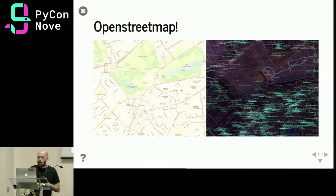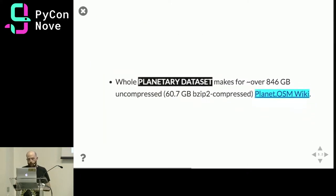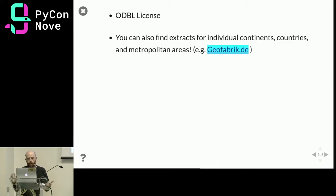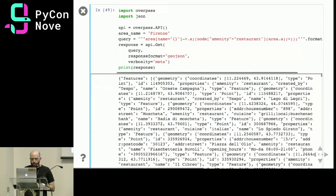One cannot cover geographic data types without mentioning OpenStreetMap, which is a geographic database of spatial data — more specifically, a database created by a volunteer community of mappers that, similarly to Wikipedia, maps the world. In its 12th year of existence the project reached almost a terabyte of data, so in some areas it's really highly accurate. You can use it because it has an ODbL license, so it's really permissive. You can find the data sliced up by continent, country, or metropolitan area, or you can query for individual features using the Overpass API.